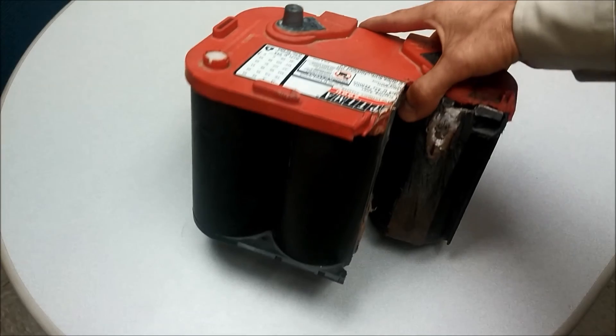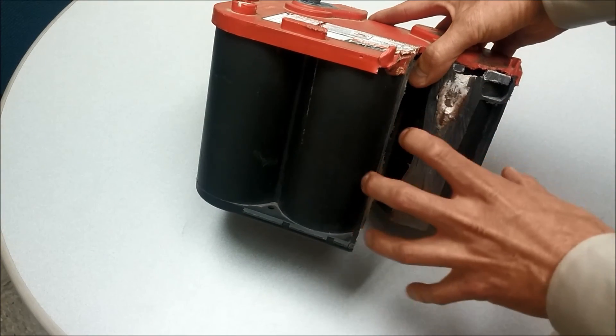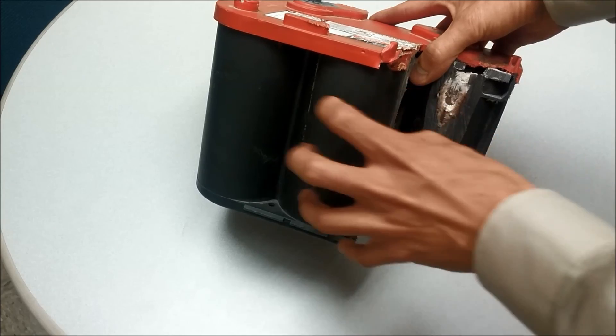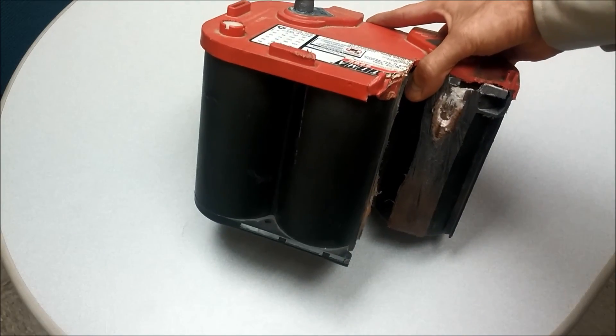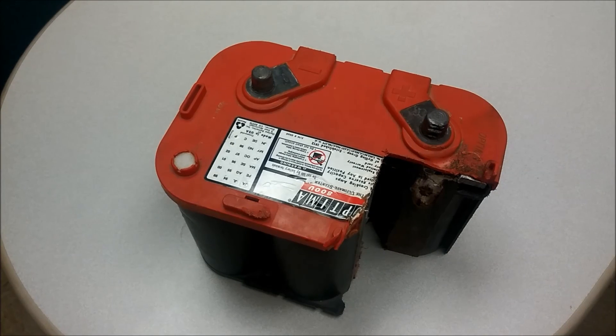You'll also notice, you can see it's just like before. It's got the six cells. Of course, this one is missing one of the cells that's been cut away. It's got the six cells, each cell producing 2.1 volts, just like the other battery. And it otherwise functioned just like the other battery does.